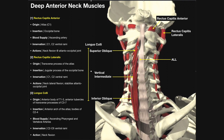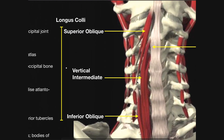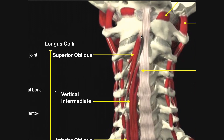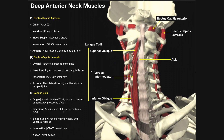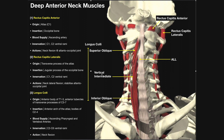The superior oblique part of longus colli has its origin on the transverse processes of C3, C4, and C5. These fibers run upward and insert on the anterior arch of the atlas. So we see origins at the transverse processes of C3, C4, and C5, with the fibers ascending to insert on the atlas.